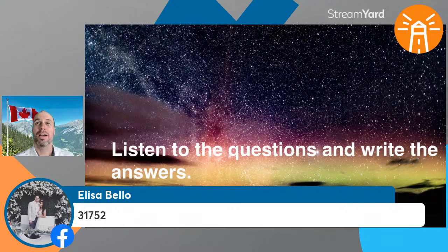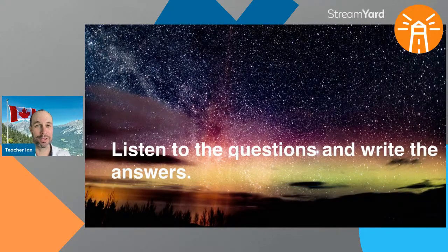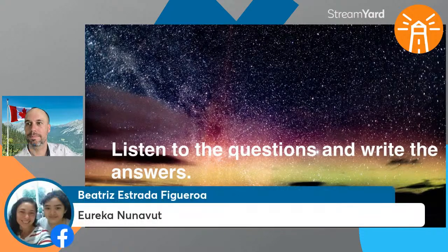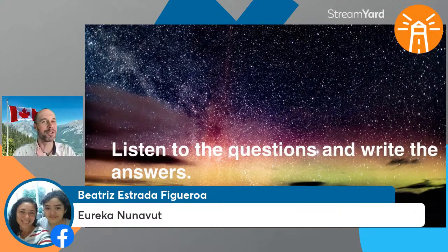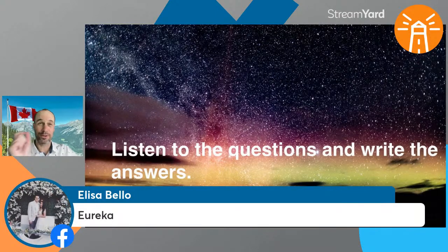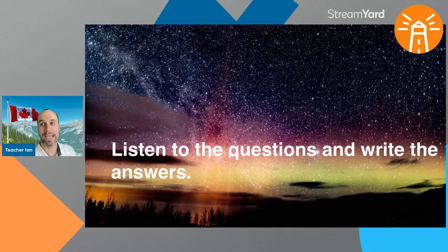Number four: which territory in Canada has the least amount of precipitation? Precipitation means rain or snow, water that comes from the sky. Bravo, Beatrice — great spelling. Eureka, Nunavut. Nunavut is in the very north of Canada — one of the large territories in the north. They get some snow but not a lot of rain. Eureka is the town, the territory is called Nunavut. Great job, Beatrice and Alyssa.